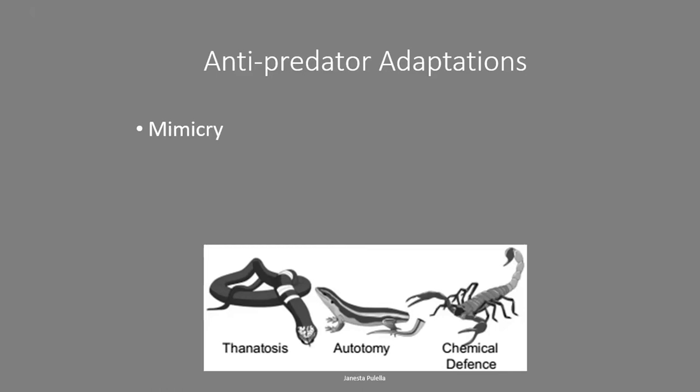Autotomy is the technical term for self-mutilation as a defense mechanism. The classic example is geckos and skinks, which are able to jettison part of their body — usually the tail — to escape a predator. The tail continues to move, distracting the predator while the lizard escapes. Some, like geckos, can grow the tail back; others, like agama lizards, cannot regrow a lost portion of the tail, but escaping is still preferable to being caught.